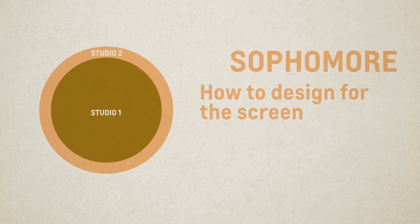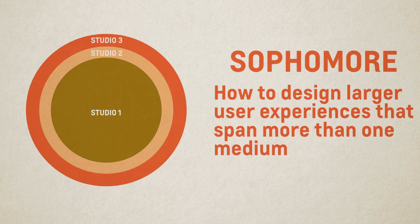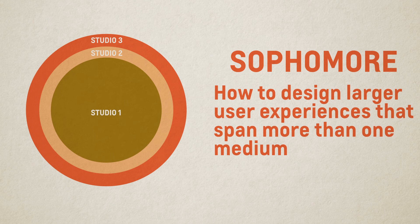Sophomores in Studio 2 learn how to design for the screen, and sophomores in Studio 3 learn how to design larger user experiences that span more than one medium, as well as physical and augmented reality UX environments.